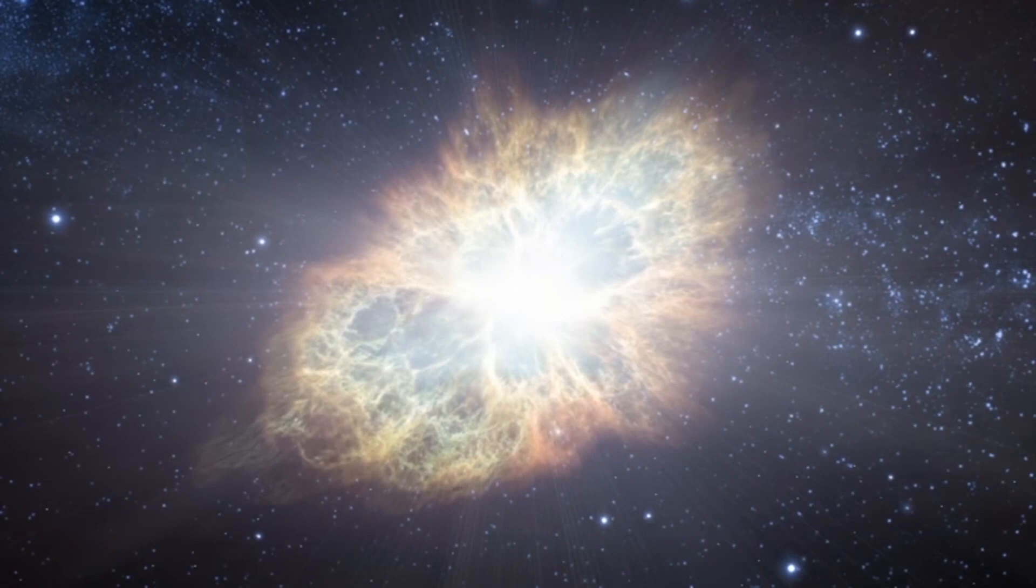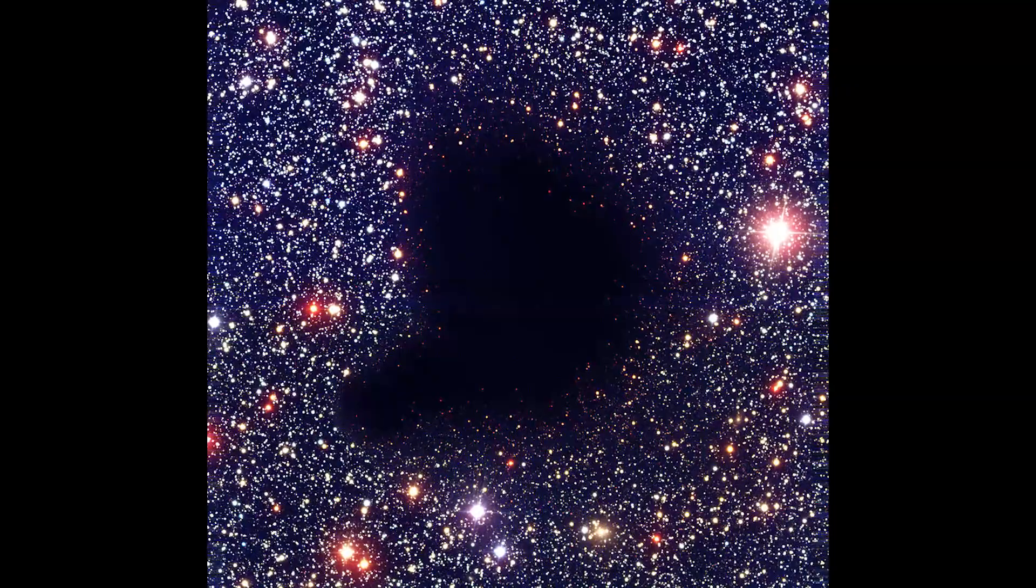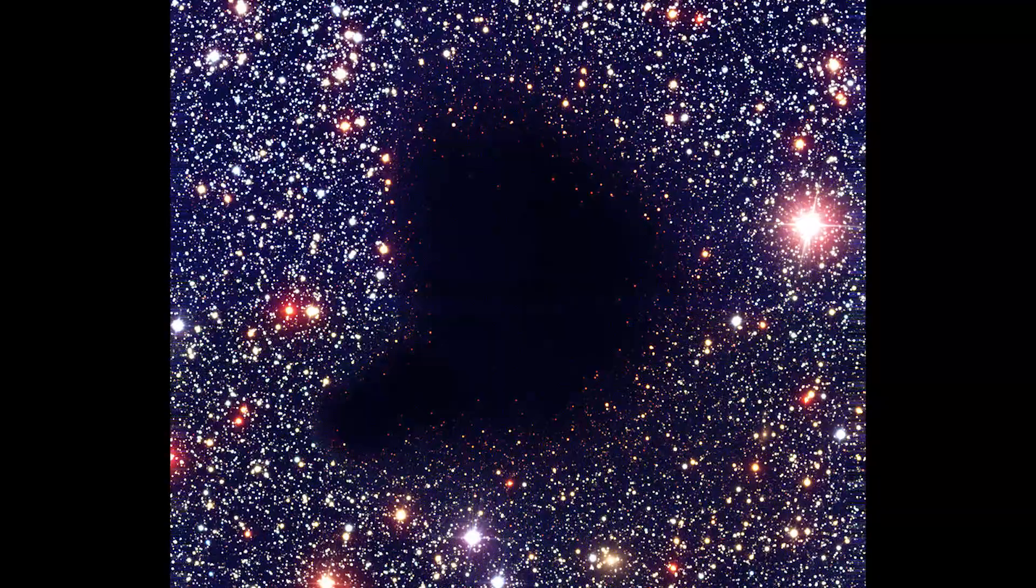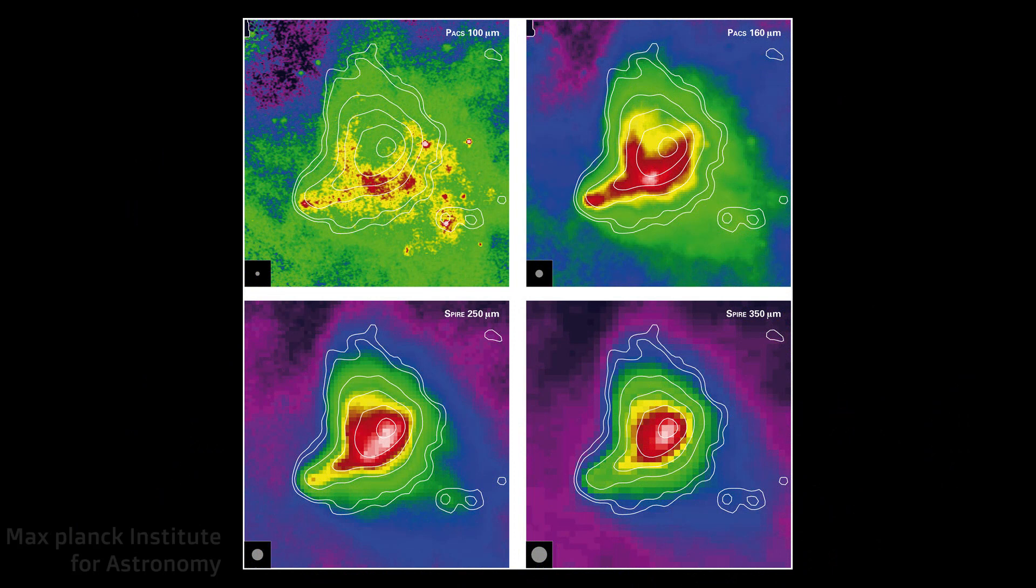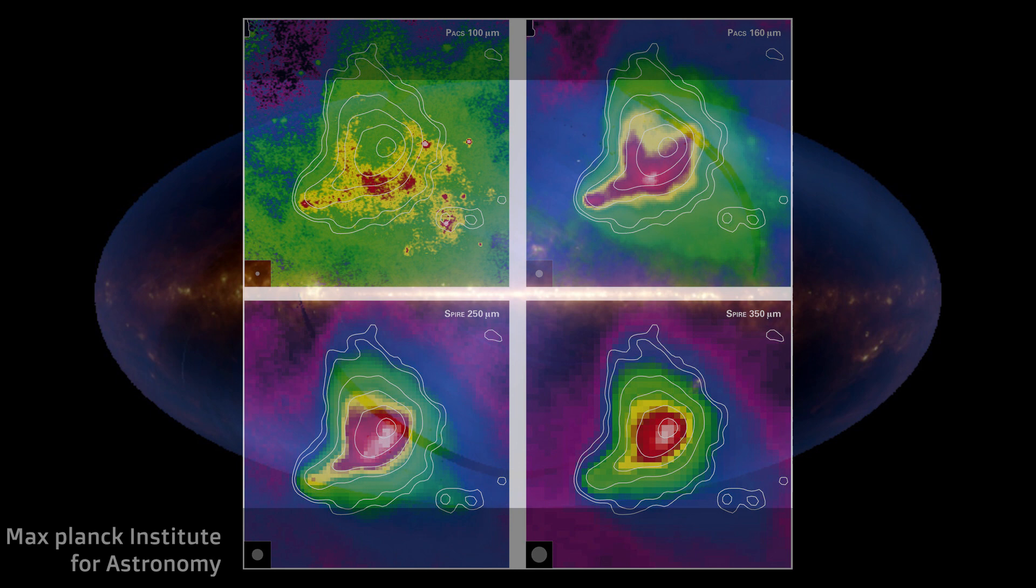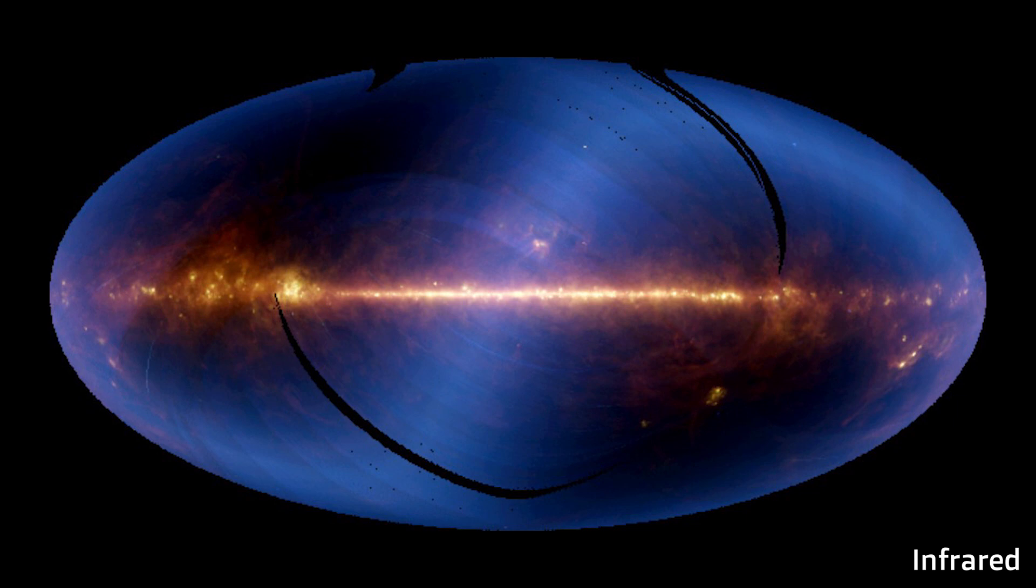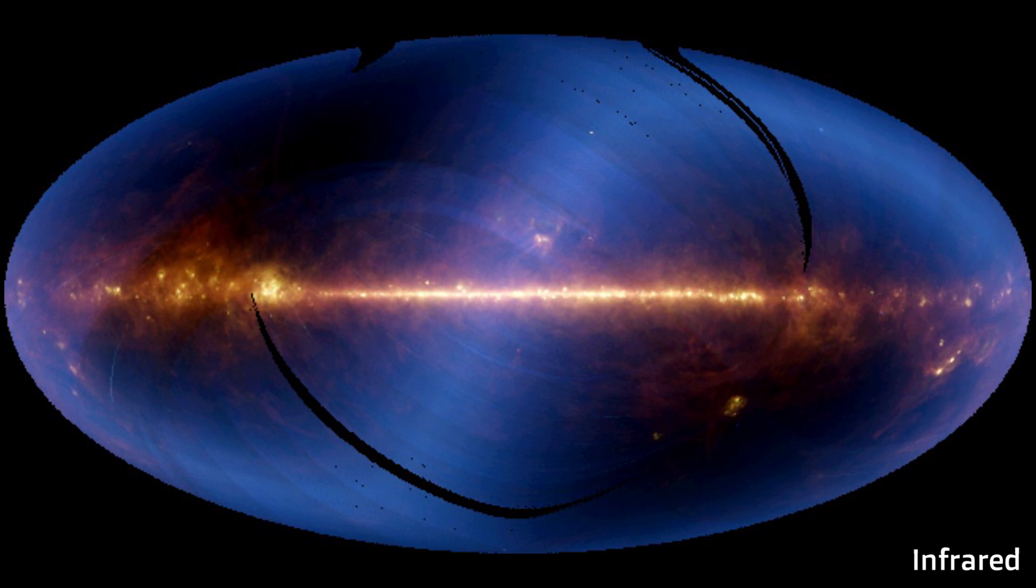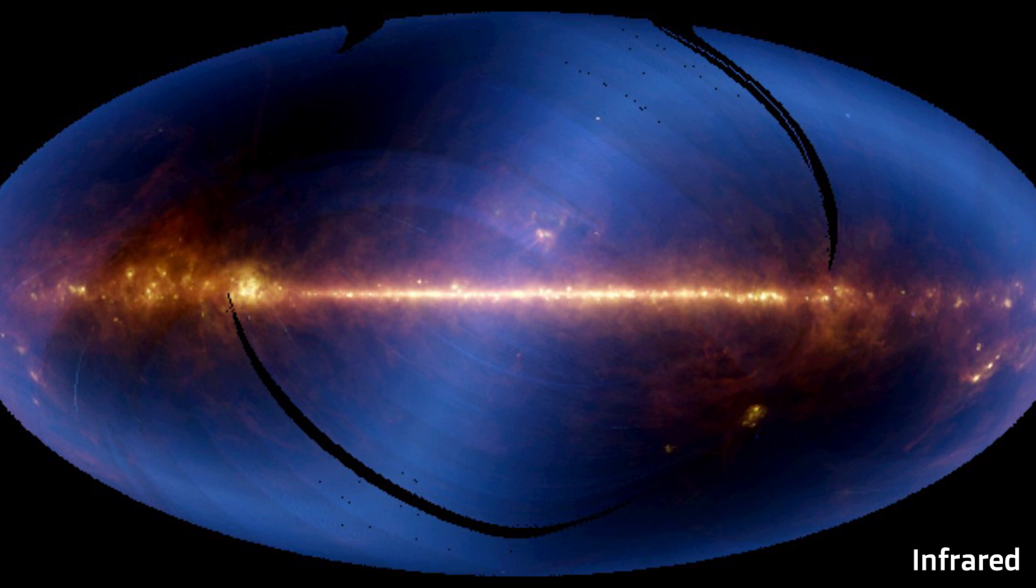Dust grains absorb ultraviolet and visible light, and they are responsible for the extinction of background stars by dense clouds, but they re-emit the radiation in the infrared, where the same clouds that appear dark in the optical shine bright in the infrared. We take advantage of this to map the cold and dense part of the interstellar medium in the infrared part of the electromagnetic spectrum. This is an RGB composite map of the infrared radiation emitted by the interstellar dust, made by the IRAS telescope in the 80s. The dust is more concentrated on the disk than the more diffused neutral atomic gas.